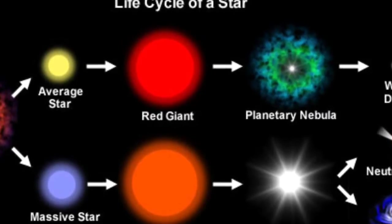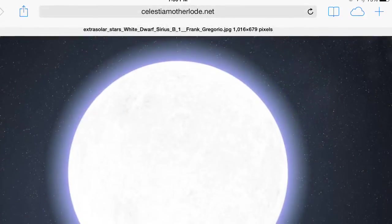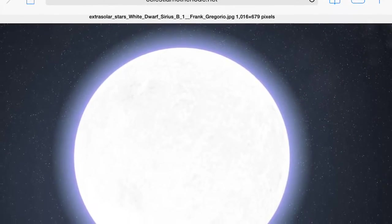This is the life cycle of a star for kids. One day, a long time ago, our sun became a white dwarf.